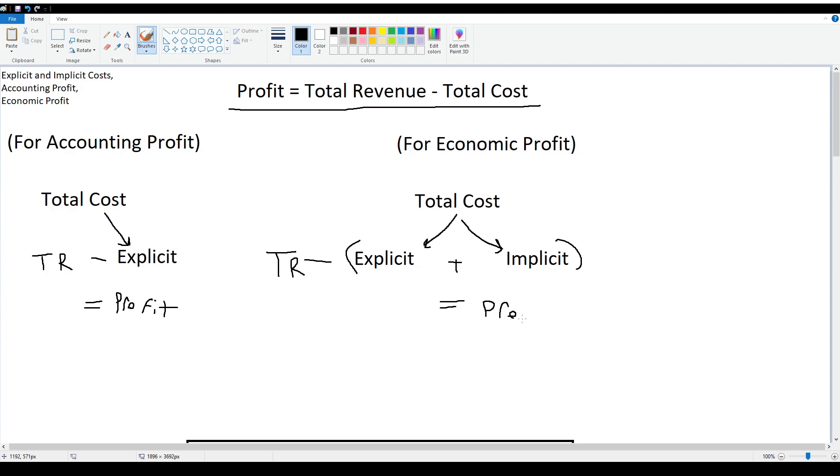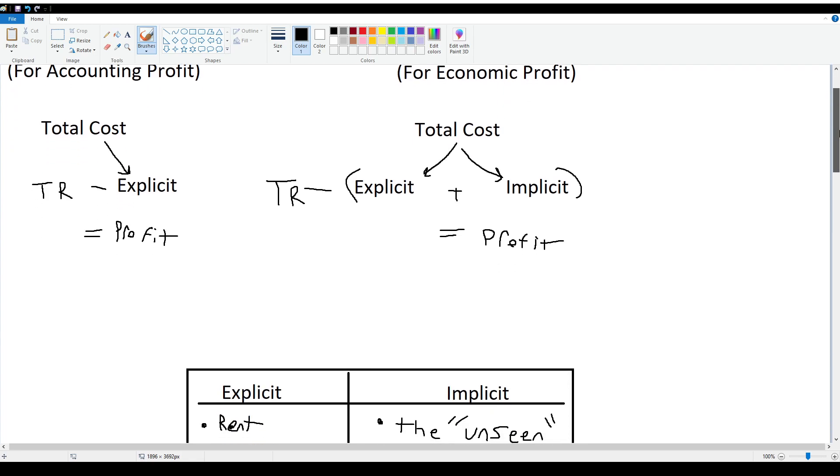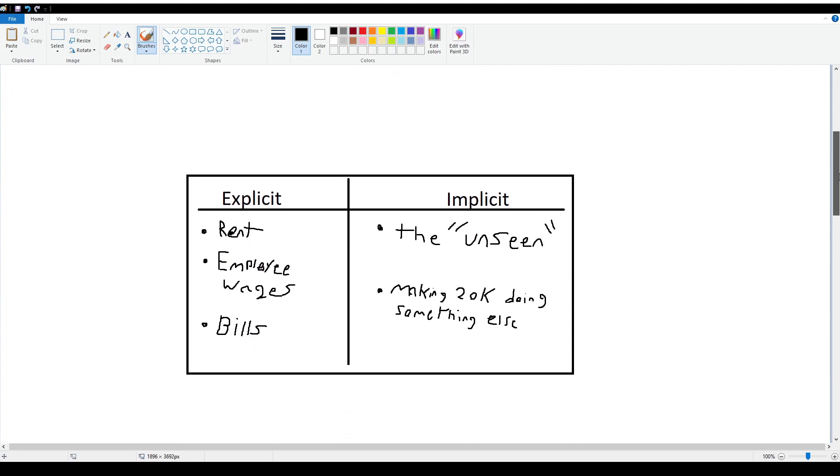So the next question is what is explicit and what is implicit? Well, explicit would be classified as rents, employee wages, bills, utilities, things like that.